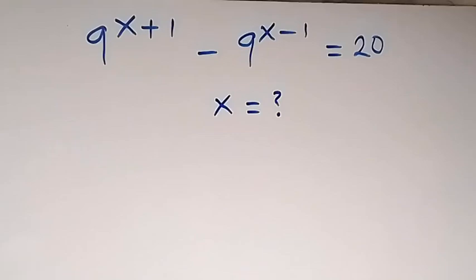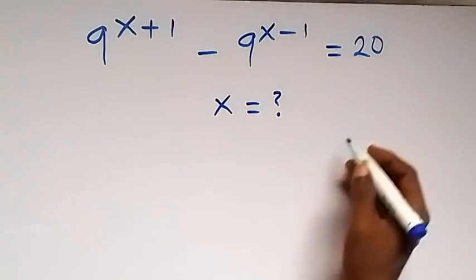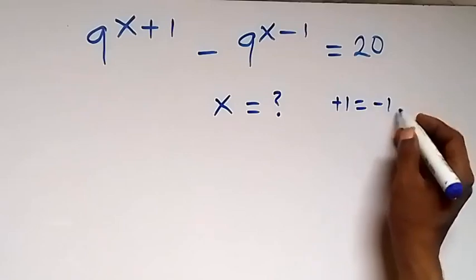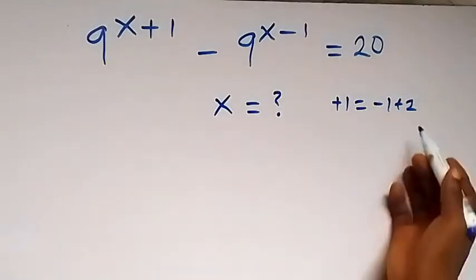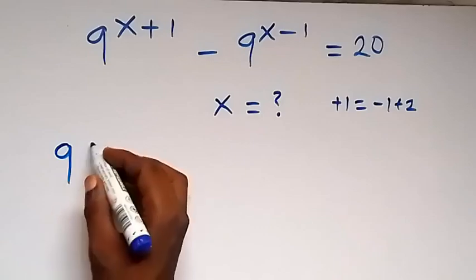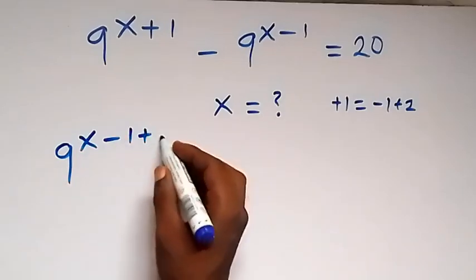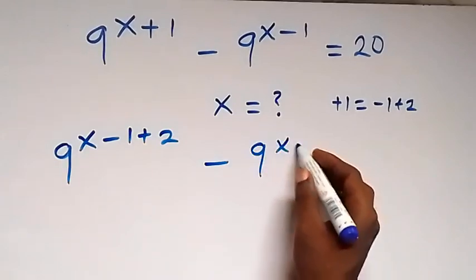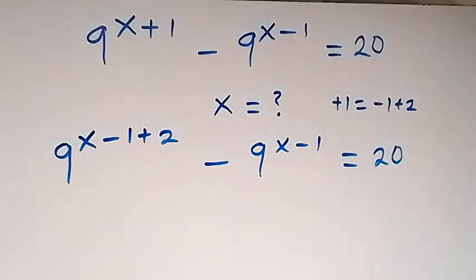From what is given here, let's write this again. Let's write plus 1 as minus 1 plus 2. So minus 1 plus 2 is 2 minus 1, which is 1. So this equation becomes 9 raised to the power x minus 1 plus 2, then minus 9 raised to the power x minus 1, equals 20.